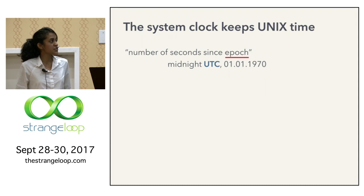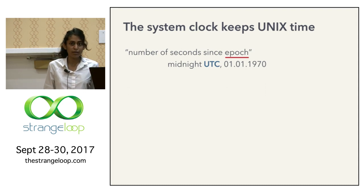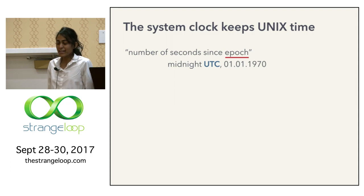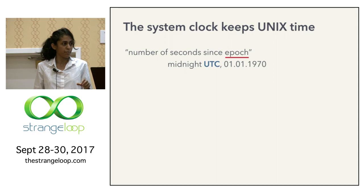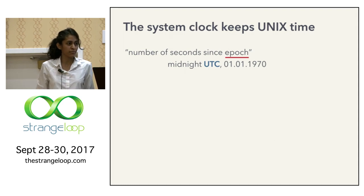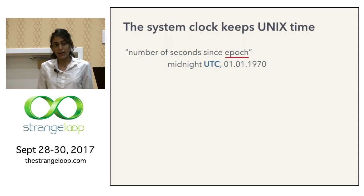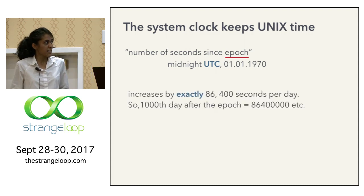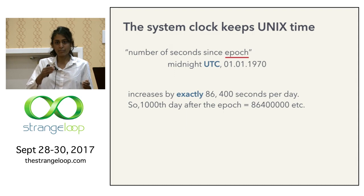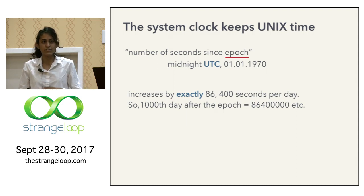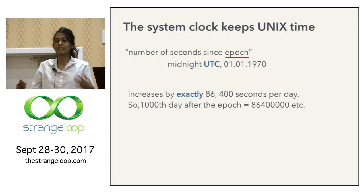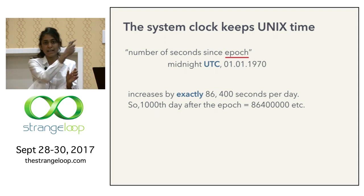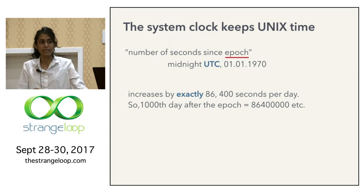Let's talk about the system clock, which keeps Unix time. Unix time is the number of seconds since epoch, which is some point in time defined with respect to the UTC time standard. The other property of Unix time is that it calculates a day as having exactly 86,400 seconds. So if we wanted to know the thousandth day since epoch, we could simply do 1000 times 86,400 and that gives us Unix time.